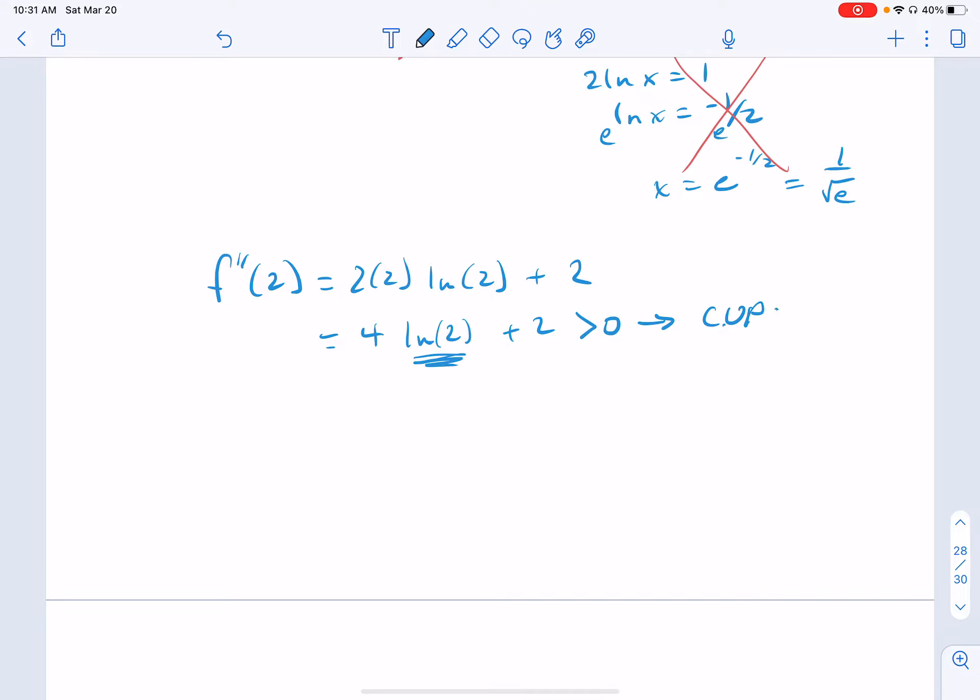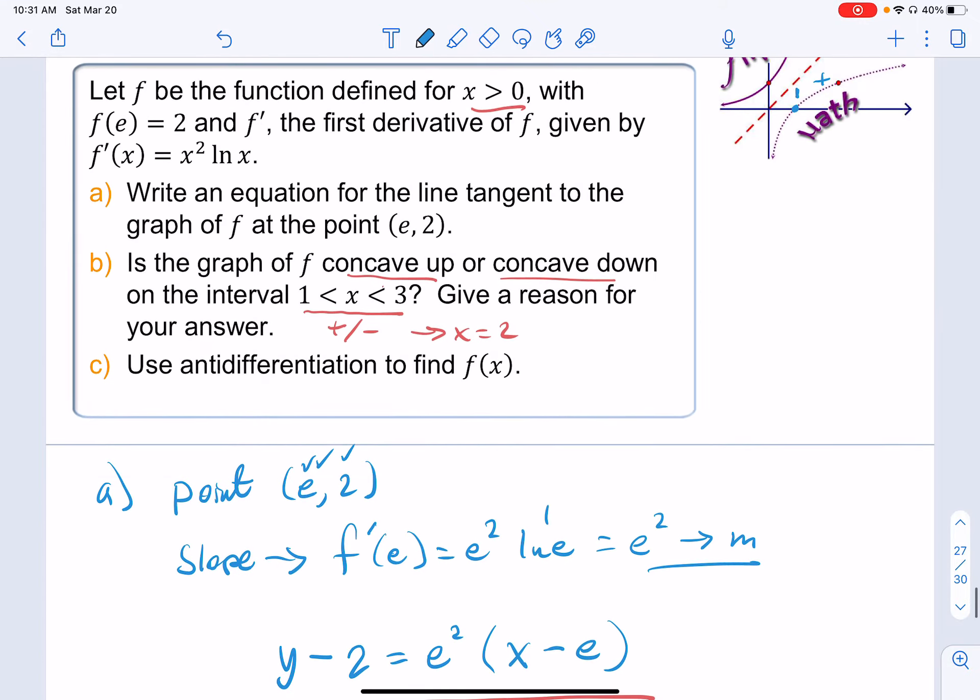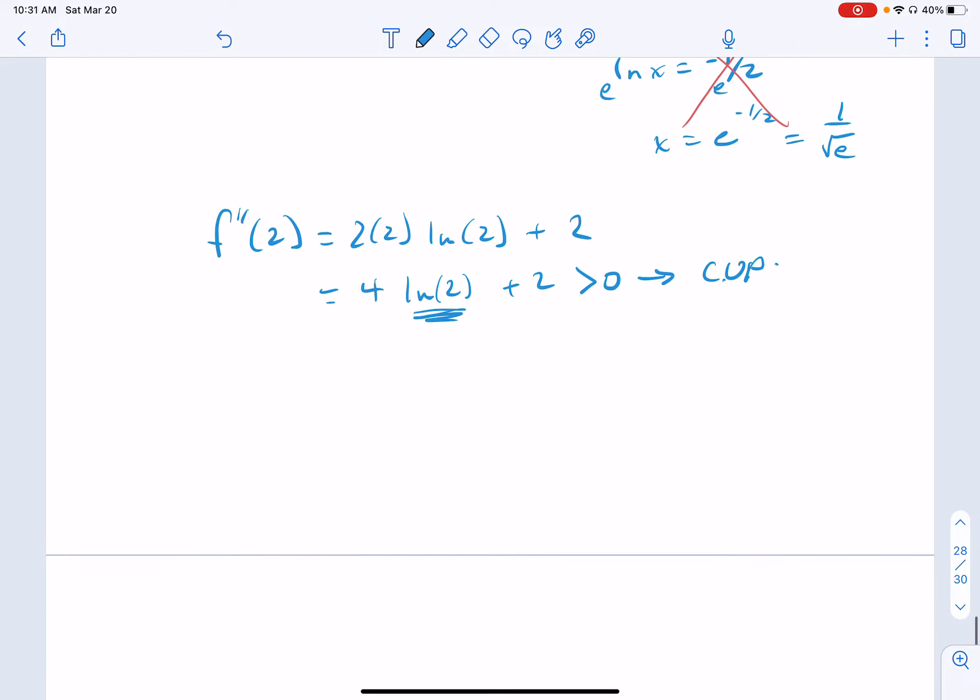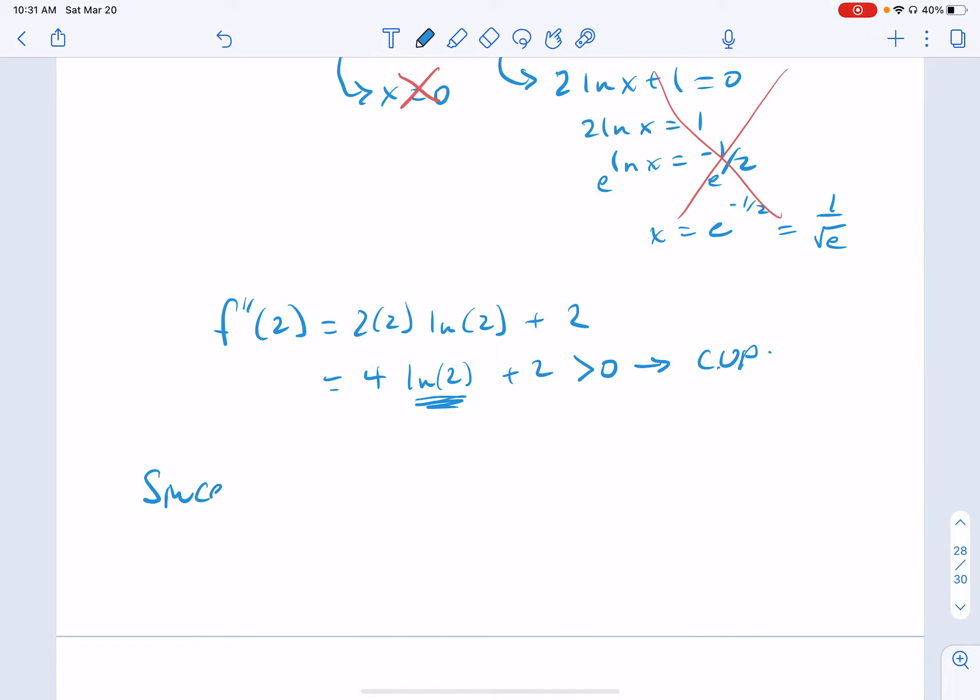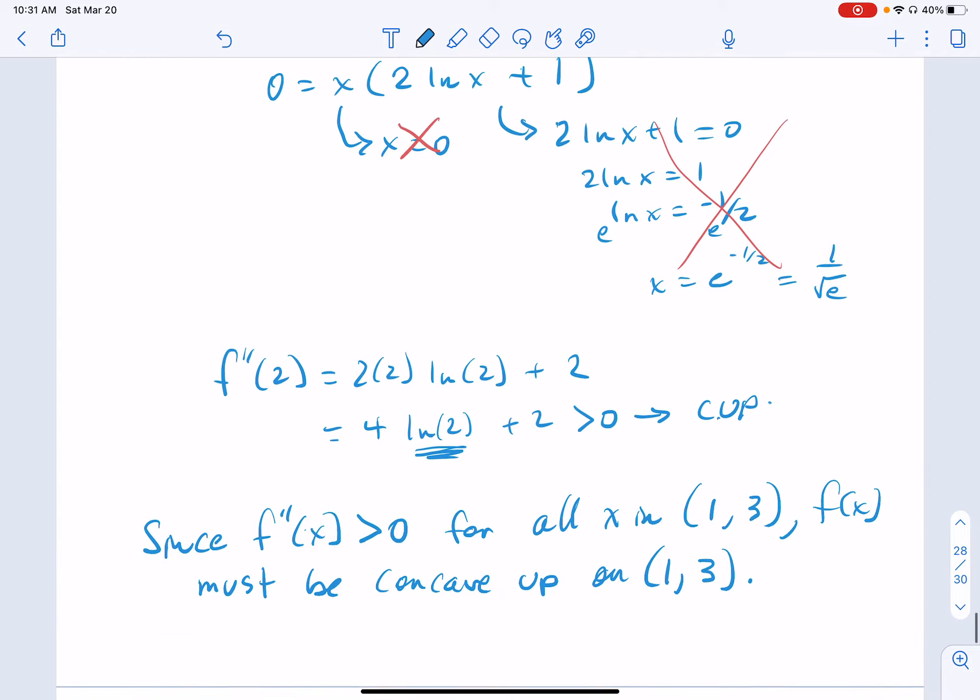It's a cup. So now the only thing that's left is to give a reason for your answer. Remember, you don't have to justify unless it tells you to do so, and that definitely did. So why do we know that it's concave up? We know that because in the interval, our second derivative is positive. Since f double prime of x is greater than 0, for all x in 1 to 3, f of x must be concave up on that interval. And that is more than adequate. It's perfect, as a matter of fact.